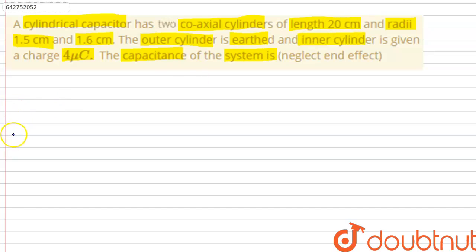by writing what's provided to us in the equation. The length of coaxial cylinder can be represented by letter l, which equals 0.2 meters. The radius of outer cylinder, which can be represented by r1, is equals to 0.016 meters. And the radius of inner cylinder, which can be represented by r2, is equals to 0.015 meters. And